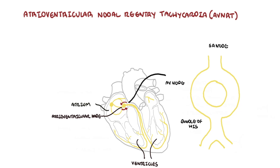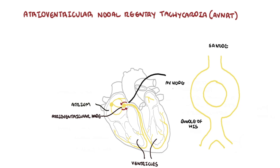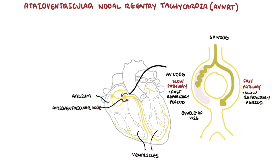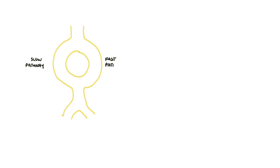In AVNRT, there are two atrioventricular nodal pathways. Patients can have two AV nodal pathways and be fine; however, some people have a slow and a fast conducting AV nodal pathway. A fast conducting pathway has rapid conduction but a slow refractory period, whereas a slow conducting pathway has a rapid refractory period coupled with slow conduction. These differences can trigger AVNRT.